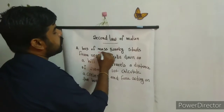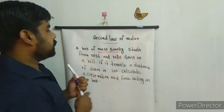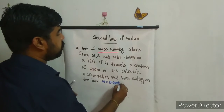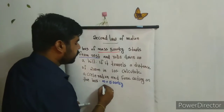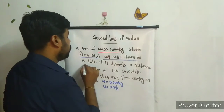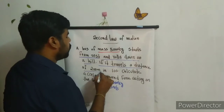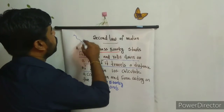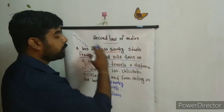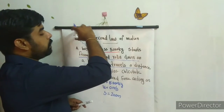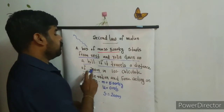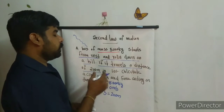Problem two: A bus of mass 5000 kilogram starts from rest, meaning the initial velocity u is equal to zero meter per second. The distance travelled is 200 meters in 10 seconds. We need to calculate the acceleration and the force acting on the bus.